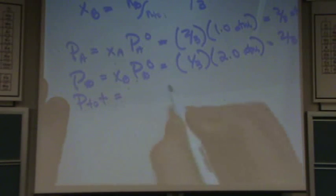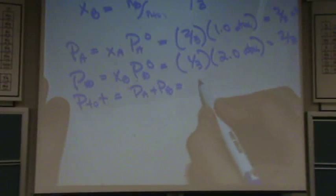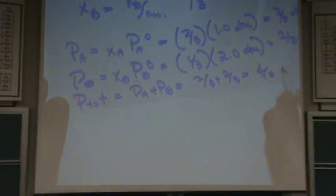Then a common thing to ask you, what's P total? Well, that would just be PA plus PB. That would be, in this case, 2 thirds plus 2 thirds, or 4 thirds atmosphere.